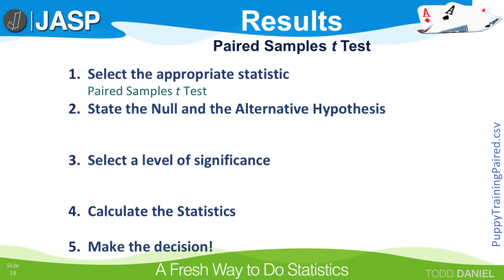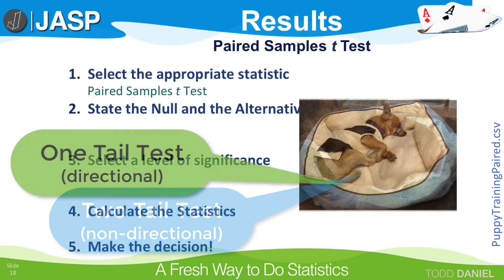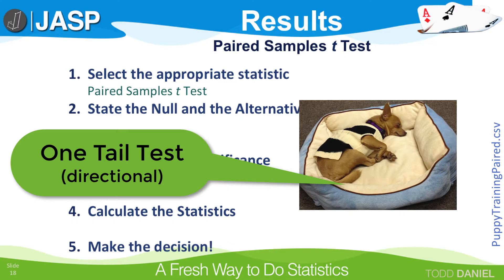Step two, state the null and alternative hypothesis. We want to know if the means of the two samples of puppies are different. We are not saying which group will be better, so this is a two-tailed test. If we said that one group was better, this would be a one-tailed or directional test.